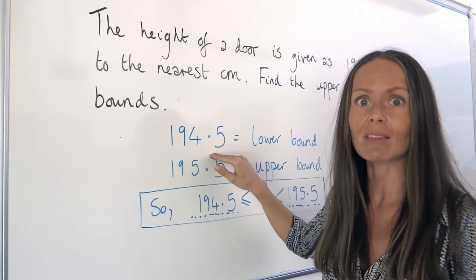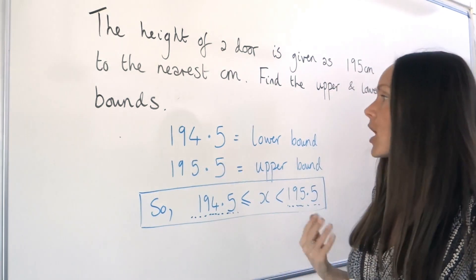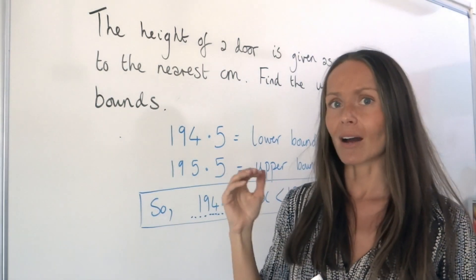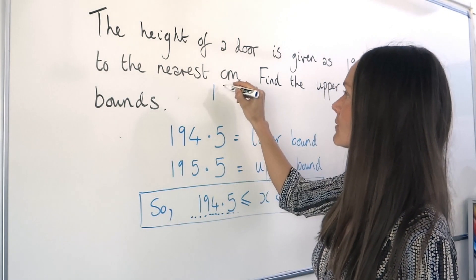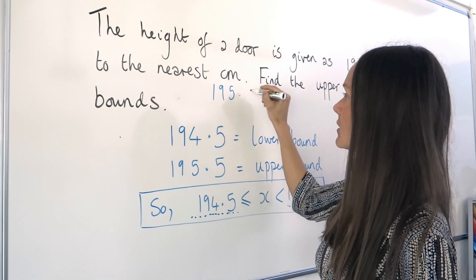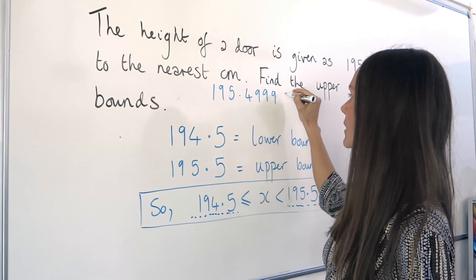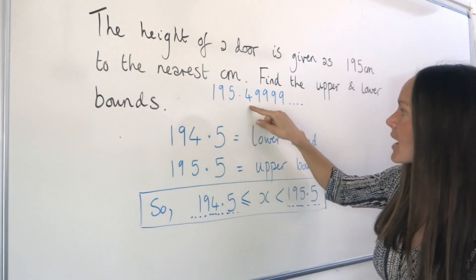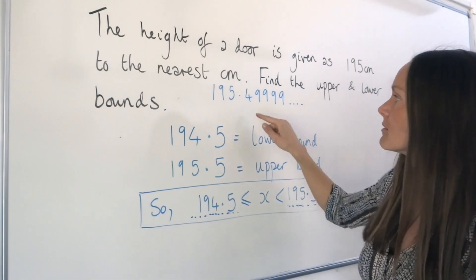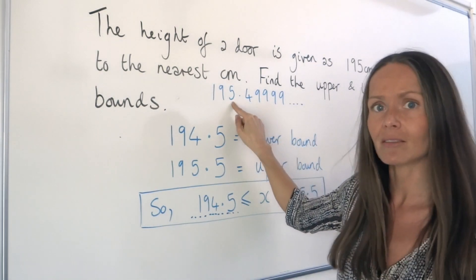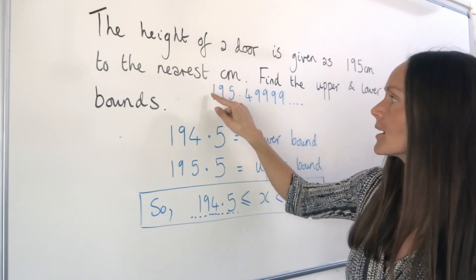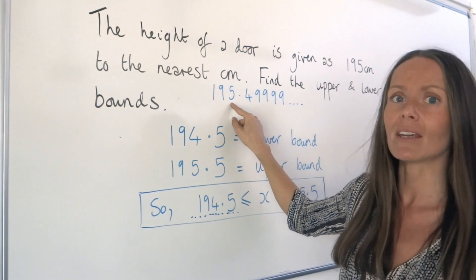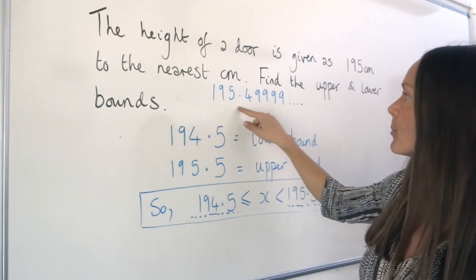The upper bound is a little bit confusing, because the maximum height the door could have been, if we're rounding to the nearest centimetre, is actually 195.4999 recurring. You can see that if you round that to the nearest whole number, the 4 doesn't round that 5 up, giving us 195. Anything bigger than that would round up to 196, which is no good. So that's the upper boundary.